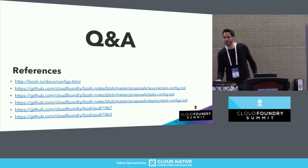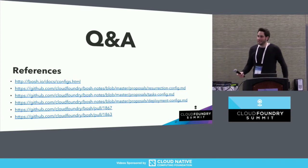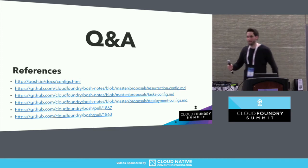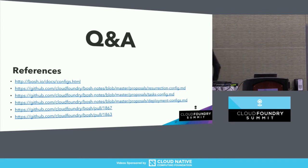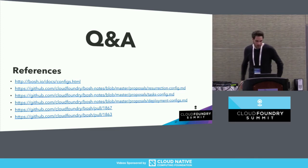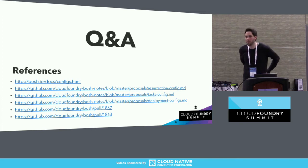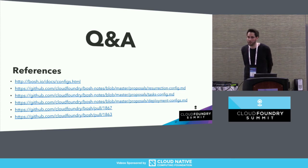Q: Are these new config types — resurrection, tasks, and the others — already incorporated or are they coming? A: They are coming. There are two PRs open for resurrection config and tasks config. Cron config we have not yet started to implement — this is just an idea — and hopefully this will come over the next few months.